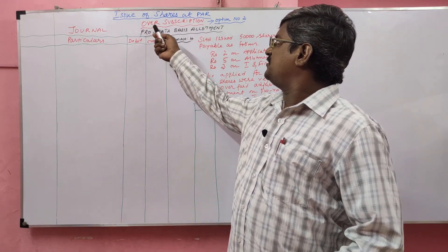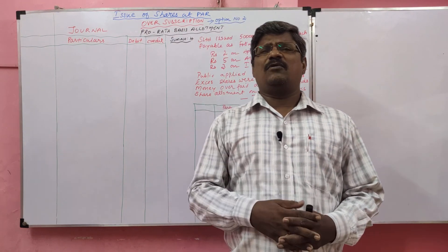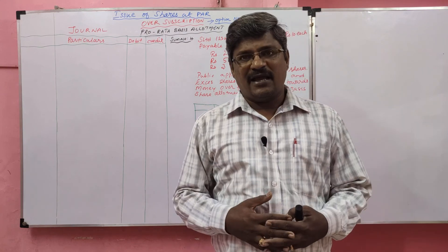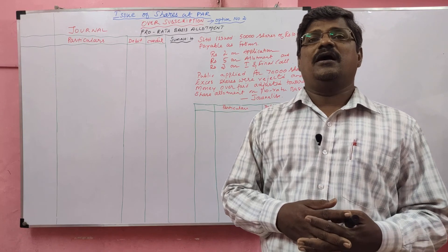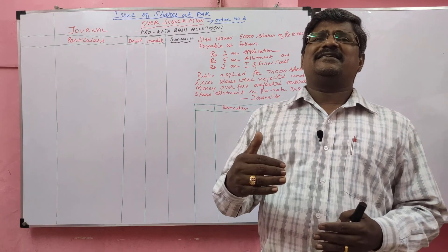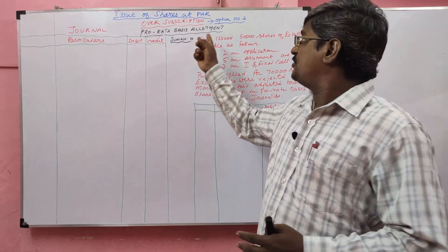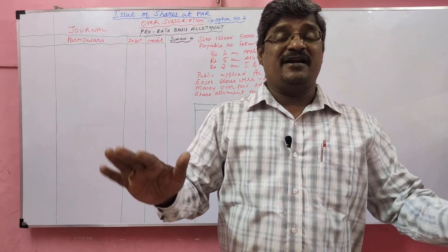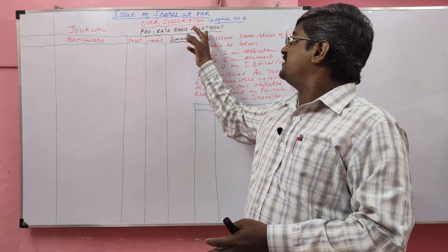Next we are going to learn oversubscription. In the last class we discussed about oversubscription. What is oversubscription? Sometimes a company receives more applications than issued shares — that is called oversubscription. In option 1, the excess shares are rejected and that money is refunded. But in option 2, excess shares are rejected but money is not refunded; it is taken to the allotment — that is called pro-rata basis allotment.